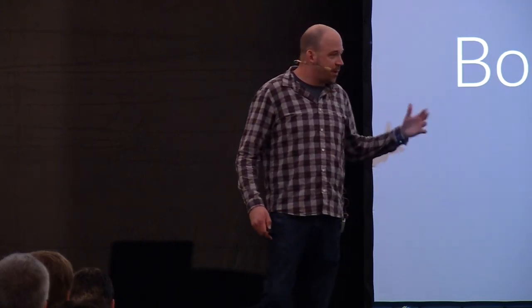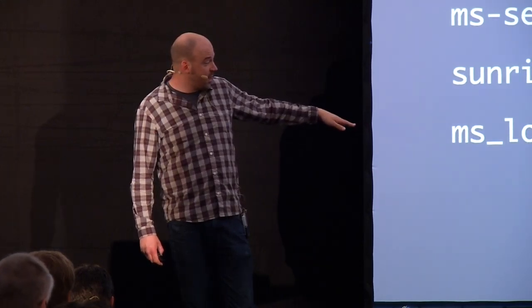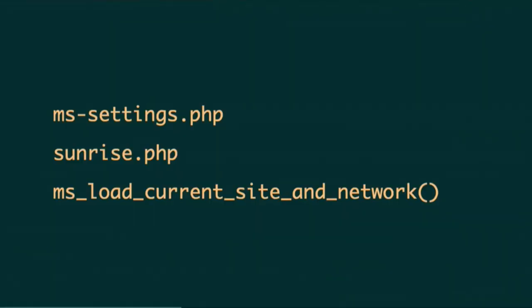The part of the process that determines which ID to use — so that we know which tables to use, which cache to use, etc. — we think of as the bootstrap. There are two or three important parts of the bootstrap. MS settings is loaded by WP settings during the normal WordPress bootstrap. If you have a custom Sunrise file, that gets processed first. And as of 4.6, there's a function that runs: ms_load_current_site_and_network. Its job is to take all of the information from the request and determine what network ID and what site ID to use, so it knows what tables to use for the remainder.